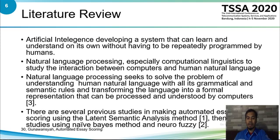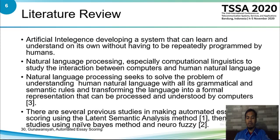So it is necessary to create an automatic essay scoring system that can provide objective and accurate assessment. One approach is machine learning, which is part of artificial intelligence application. Artificial intelligence focuses on developing a system that can learn and understand on its own without having to be repeatedly programmed by humans. On the other hand, natural language processing, which is a field of AI, specifically computational linguistics, studies the interaction between computers and human natural language.